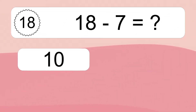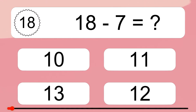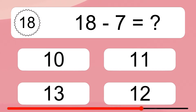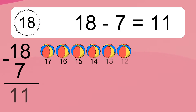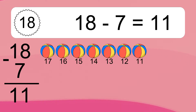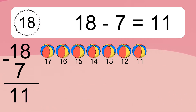18 minus 7 equals what? 18 minus 7 equals 11. Let's count it. 17, 16, 15, 14, 13, 12, 11.